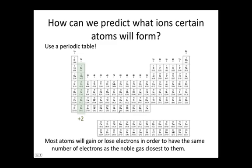Likewise, atoms in the second column of your periodic table will want to lose two electrons. And remember, because we're losing negative charge, we're forming more positive ions.